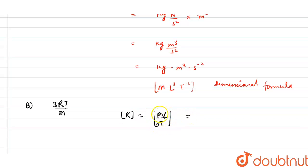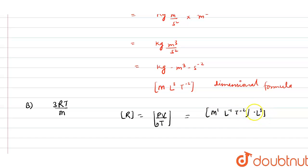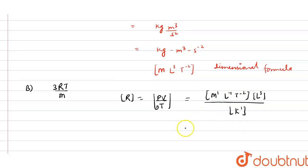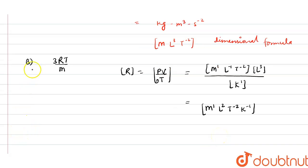The dimension of pressure P is ML⁻¹T⁻², volume is L³, and temperature is K¹. So the dimension of R = ML⁻¹T⁻² × L³ / K = M¹L²T⁻²K⁻¹.